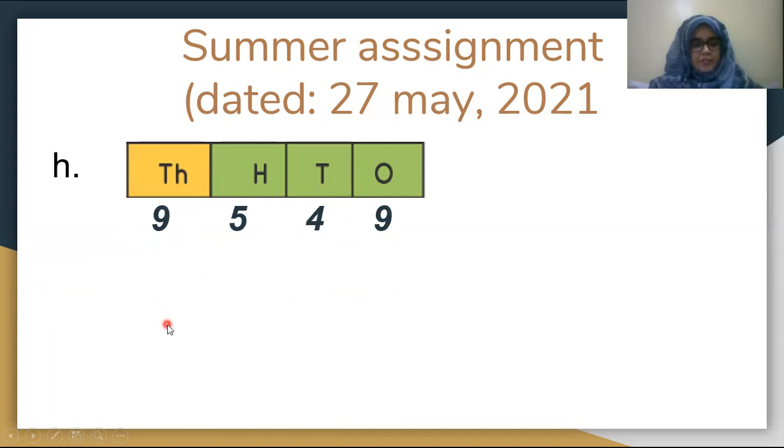Part H is 9549 and 328. You have to add plus and add your answers.